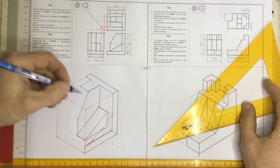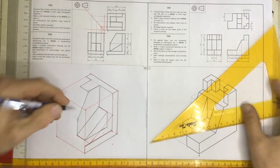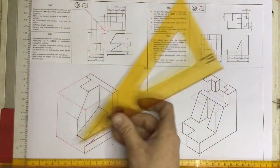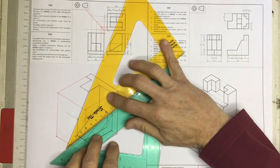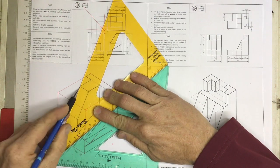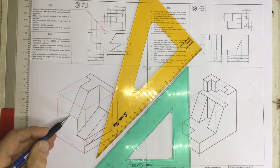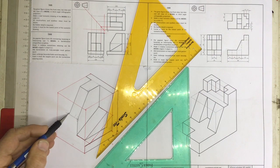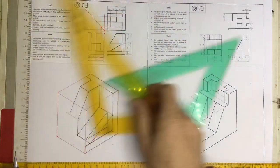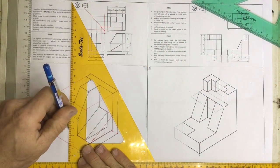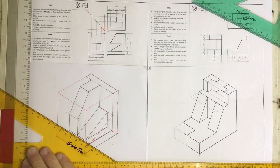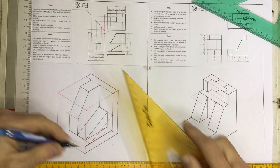I need to go across 32 millimeters. Draw a construction line. Take your set square, place it, and slide to get the second point. You could measure, but I find it easier to slide the set squares - very quick and easy. Drop a line down and continue that line.